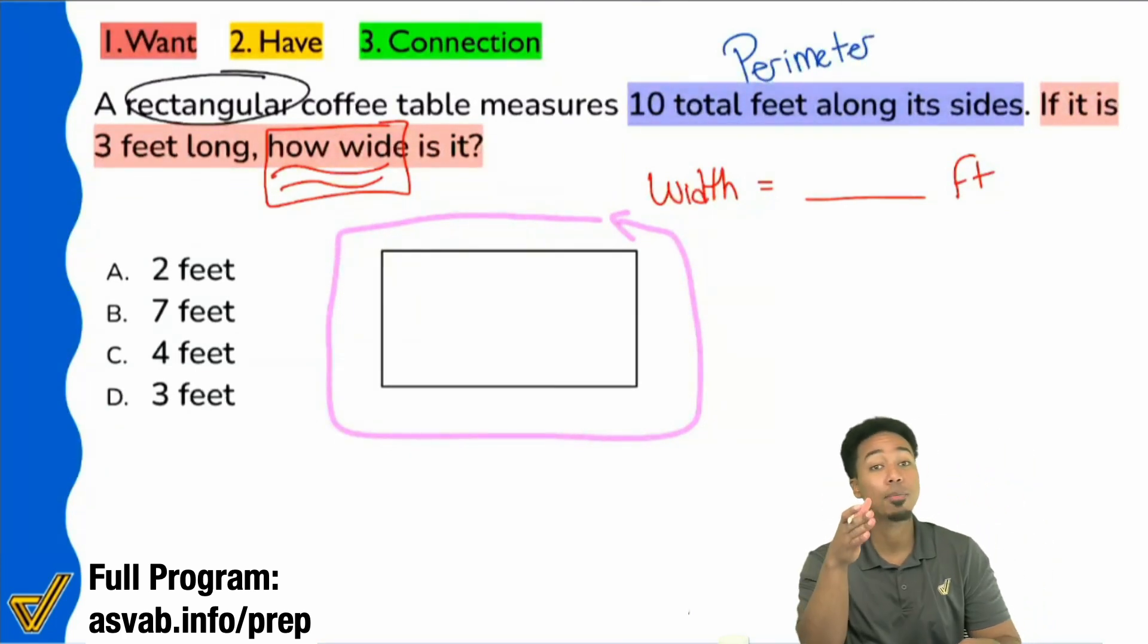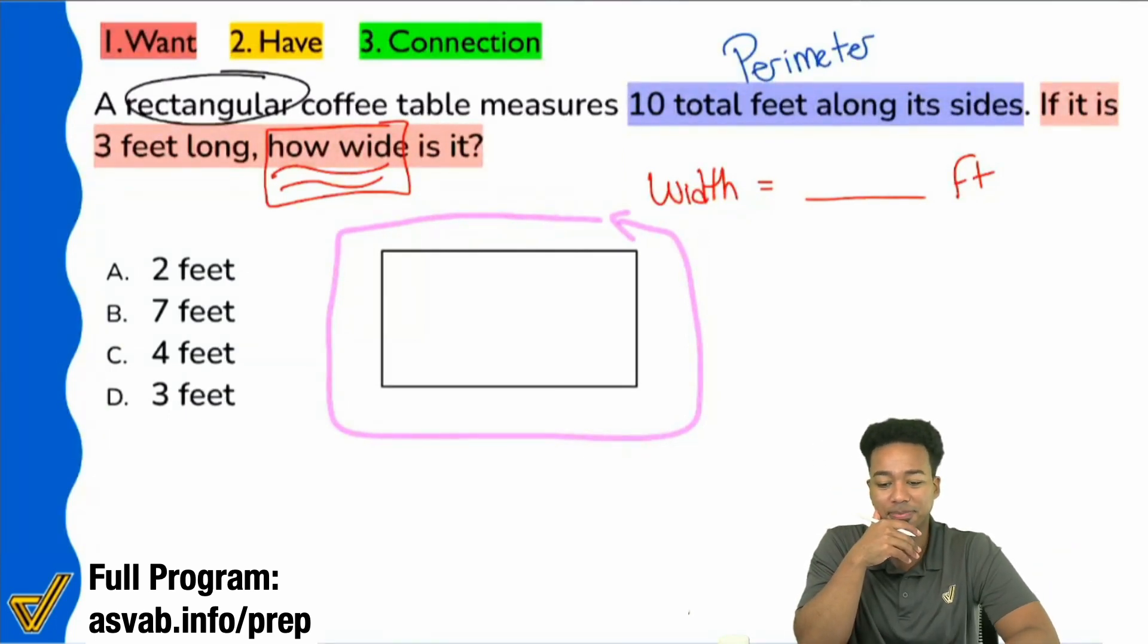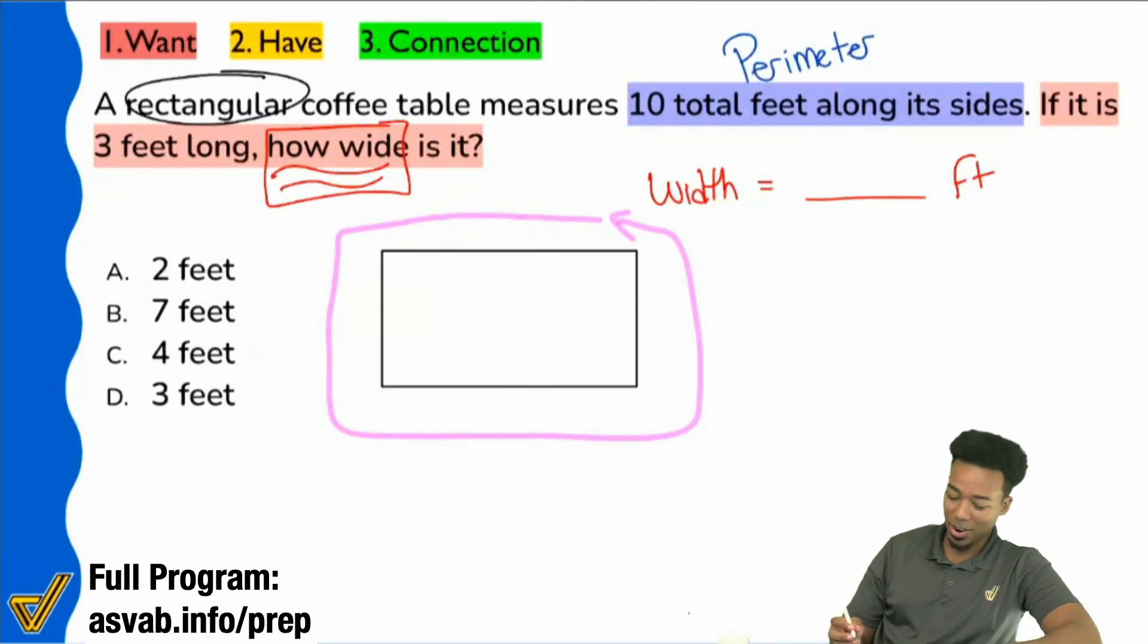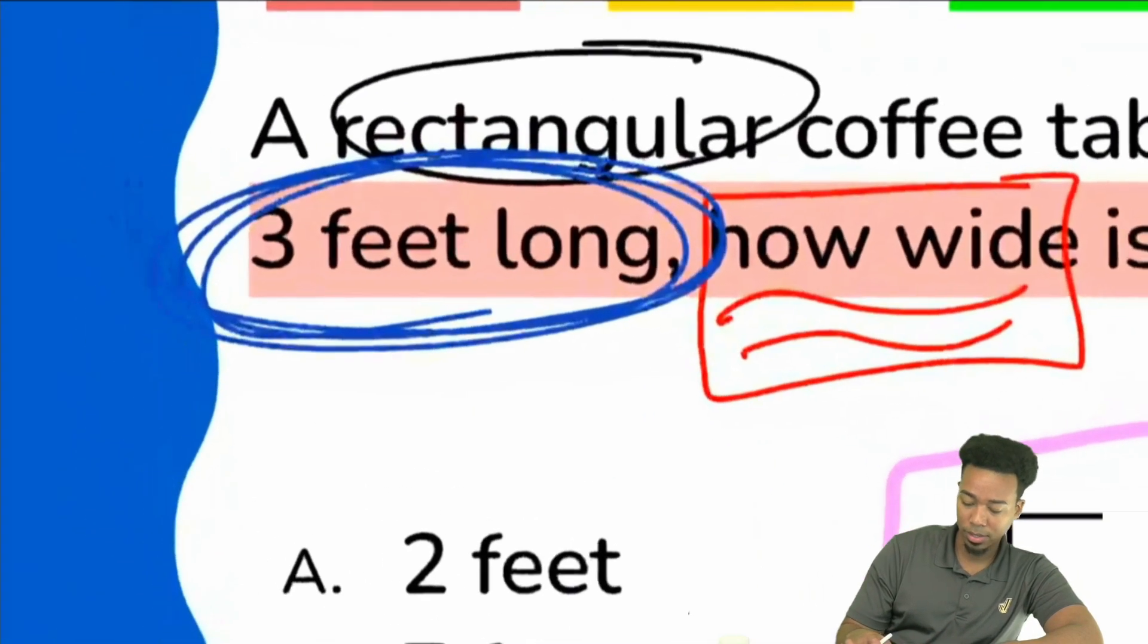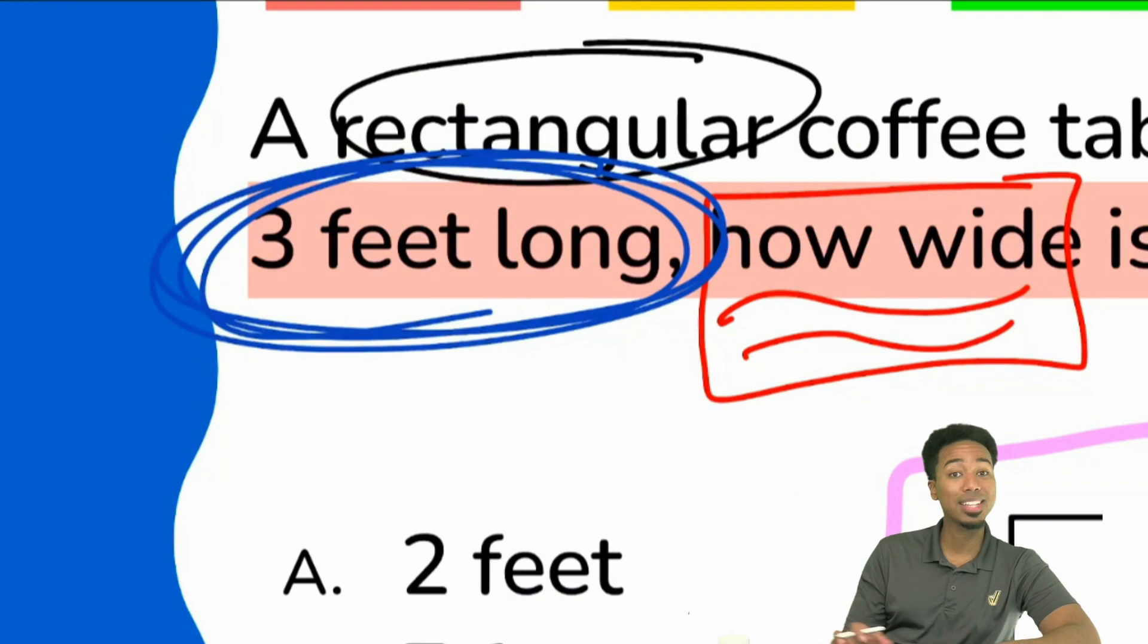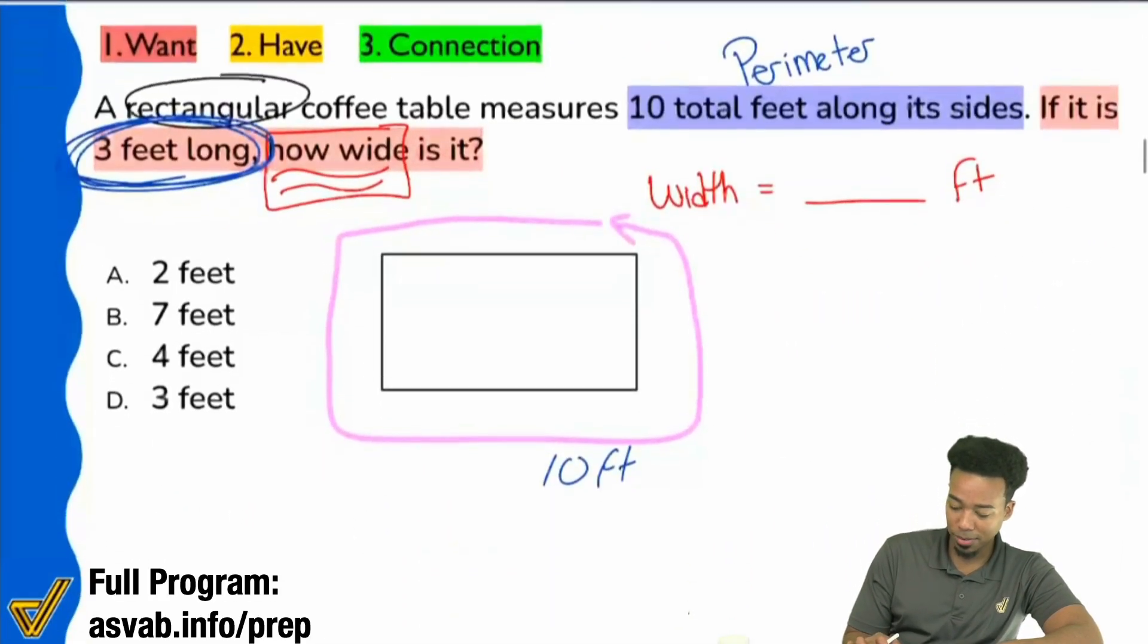So the 10 total feet along the sides, everybody, that is perimeter. One more time, everybody, in the chat box, how do we calculate perimeter for any shape? How do we calculate perimeter? Right, we're going to be adding up all the sides. Add up all the sides and we're good. There it is. We know that if we add up all the sides, we get 10 total feet. And what else do we know? Well, we're given right here, it's three feet long. Three feet long. That means that we're given the length. The length is three feet.